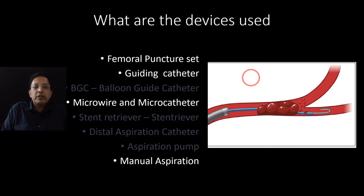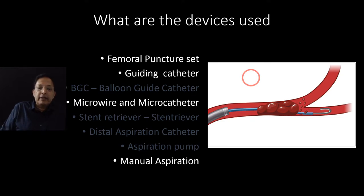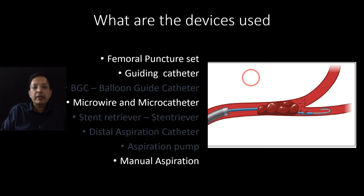So, summarizing: a guiding catheter is a stiff catheter extending from the femoral artery all the way to the carotid. In mechanical thrombectomy, the balloon guide catheter is preferred. We will discuss the options in more detail in the next lecture.